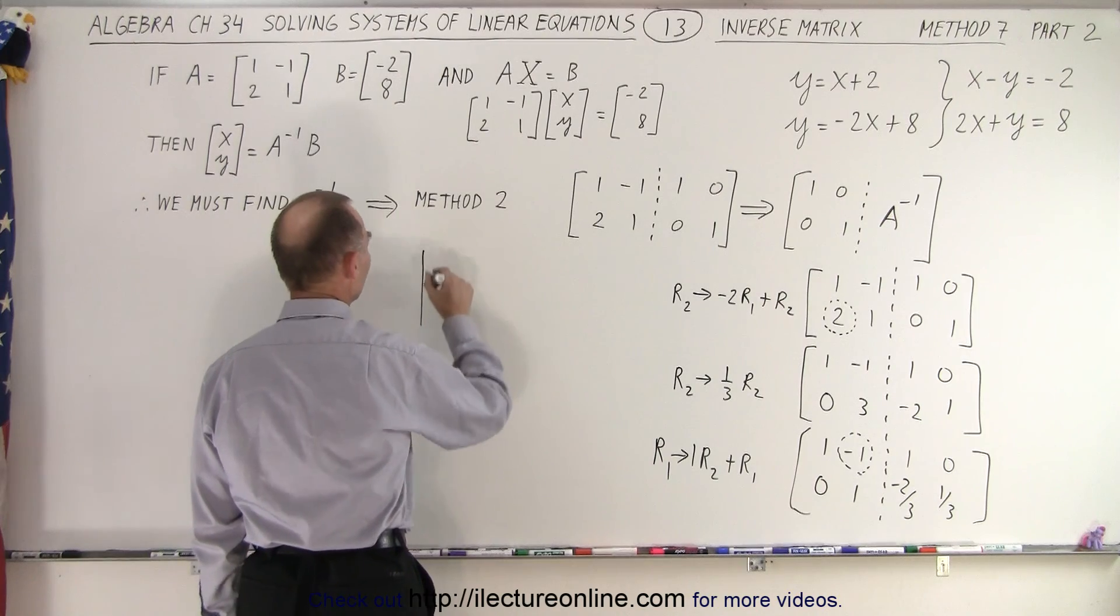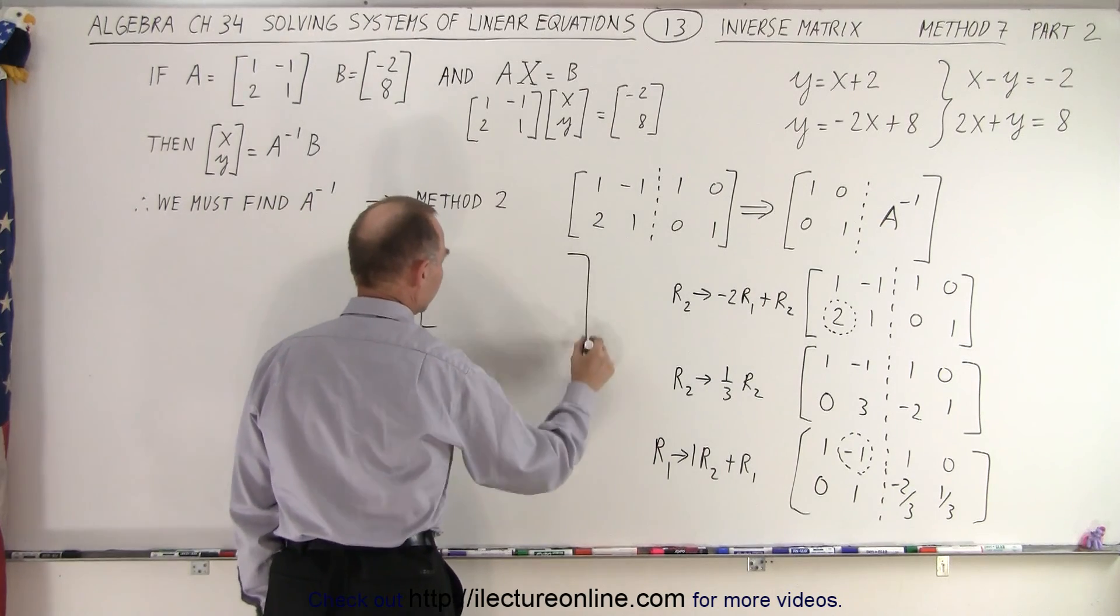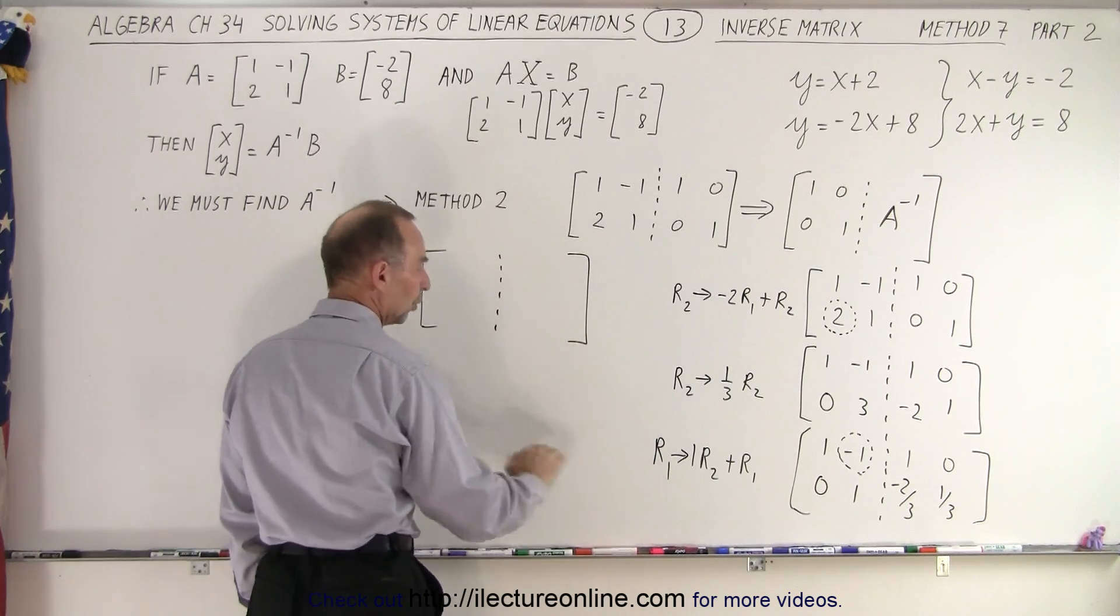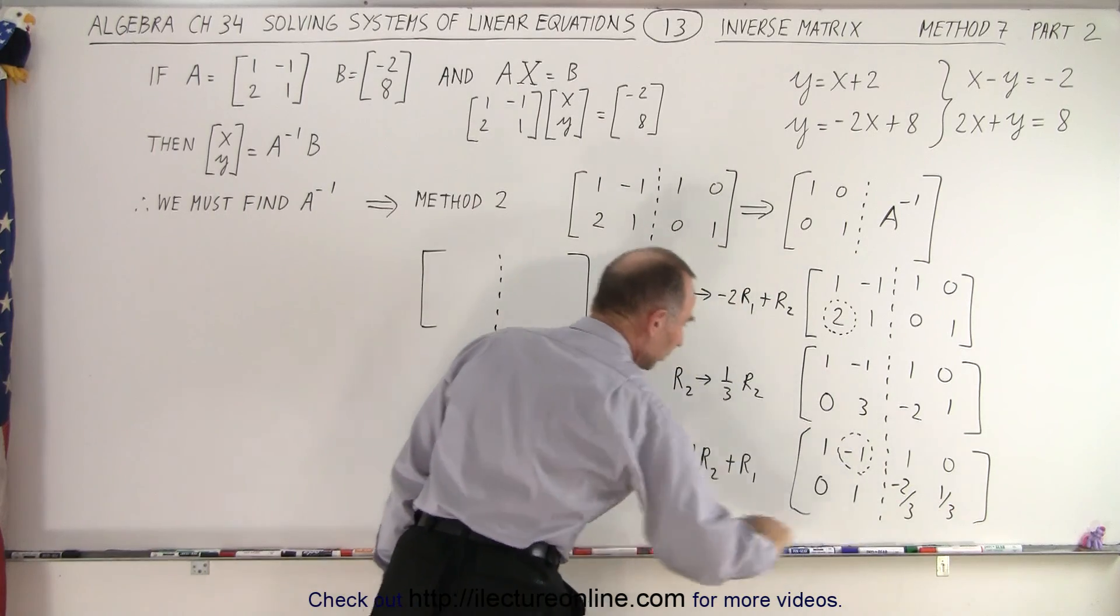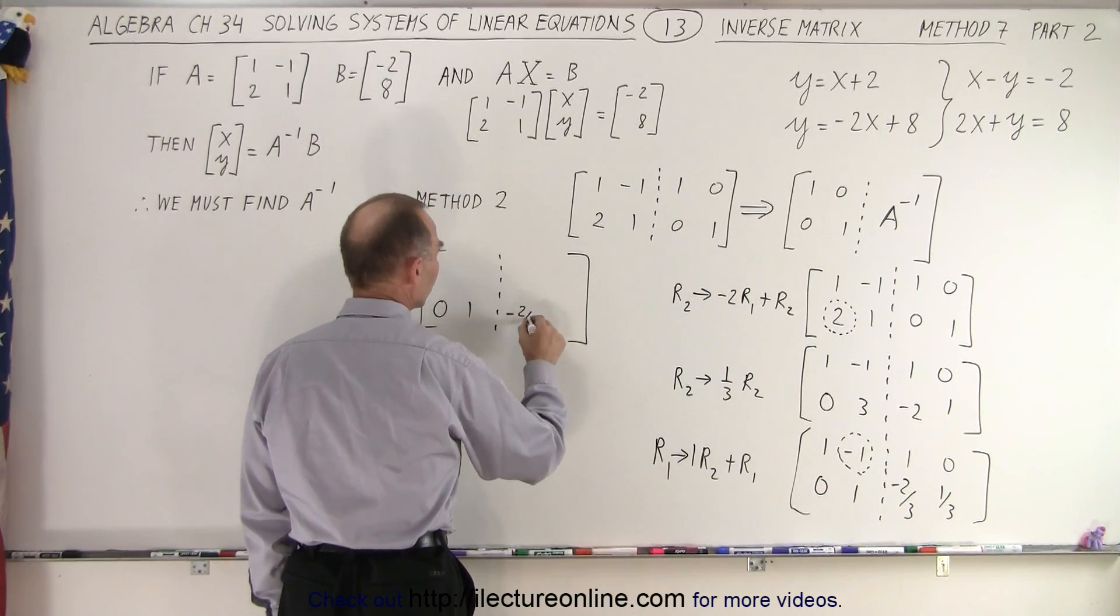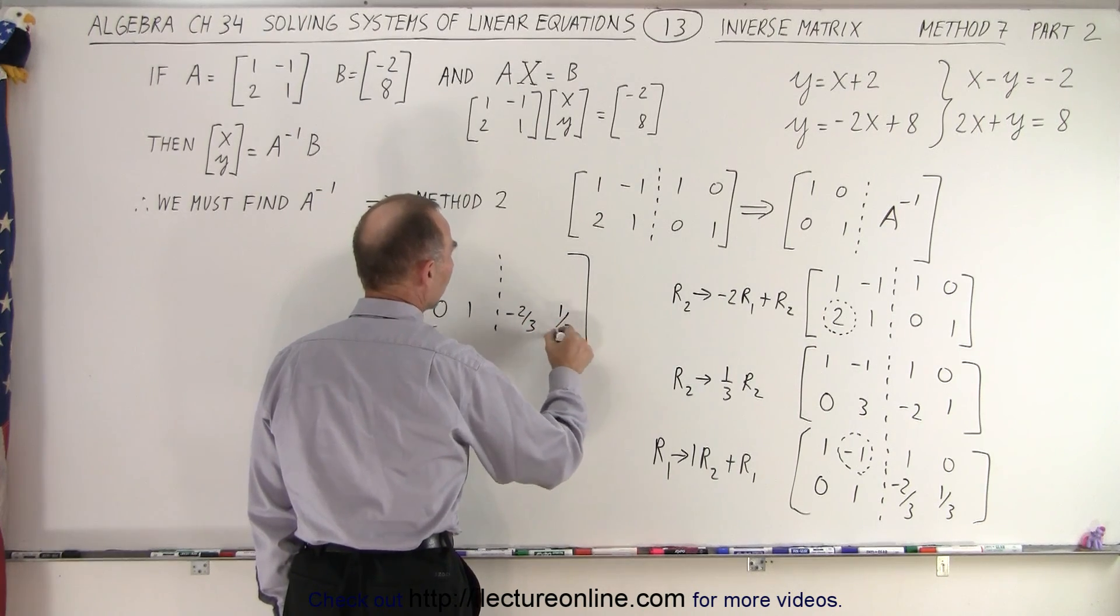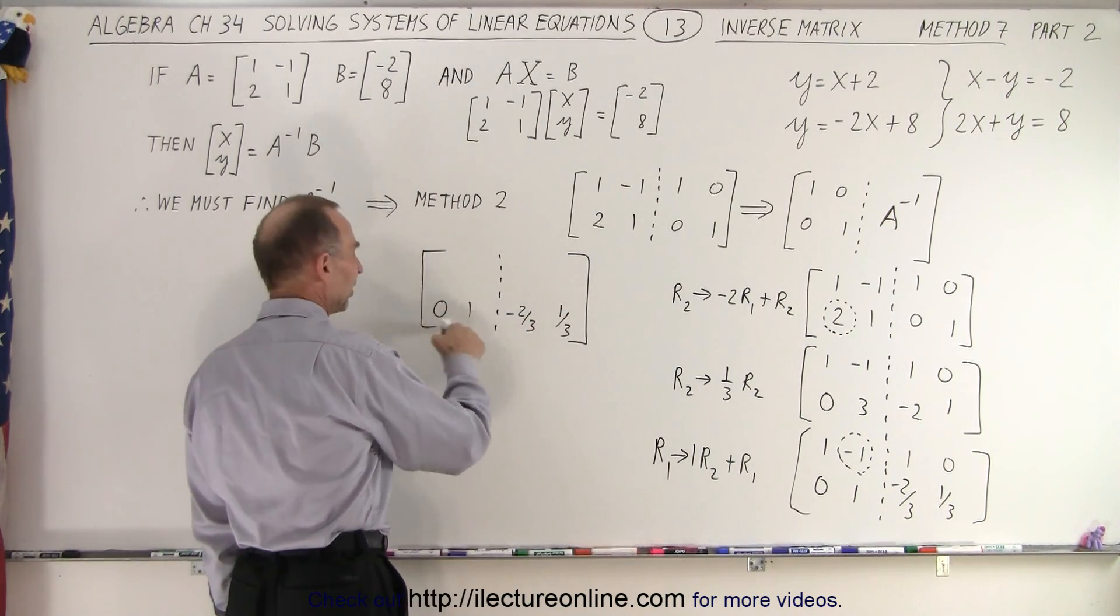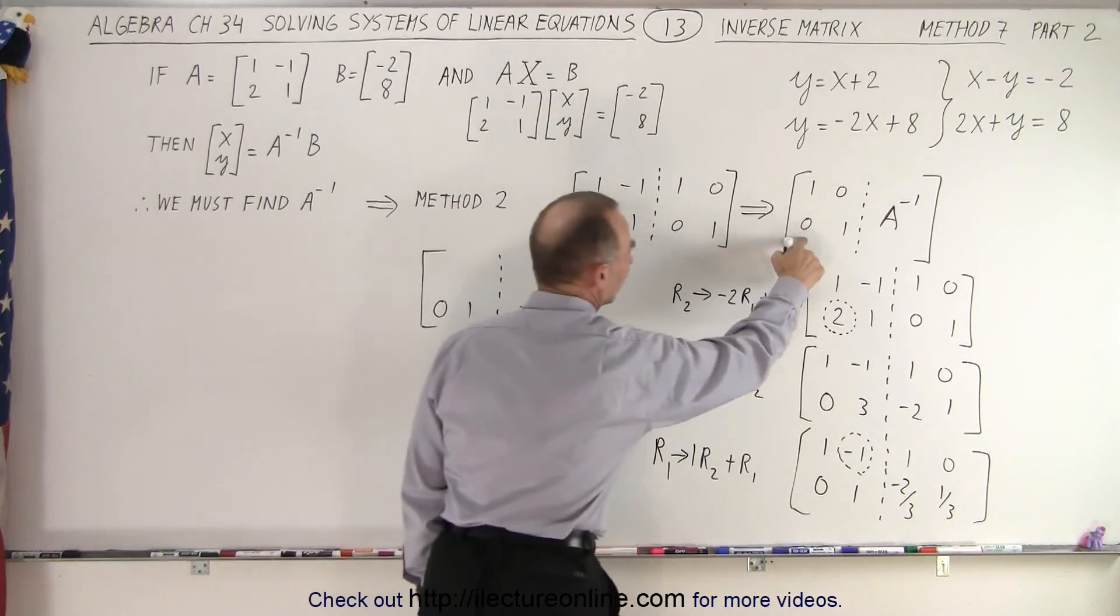So let's come up here and see what we have. Notice I'm not changing the bottom row. That is going to be a 0 and a 1, a negative 2 thirds and a 1 third. And then, of course, notice that this is already in the correct form because we want a 0 and 1 there.